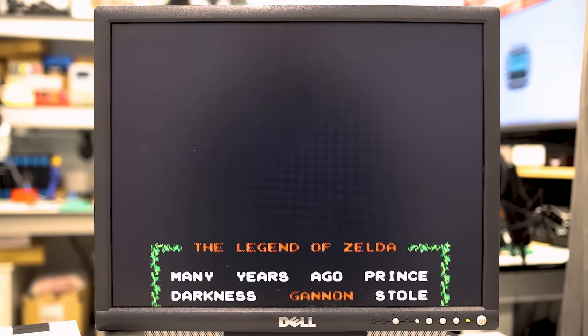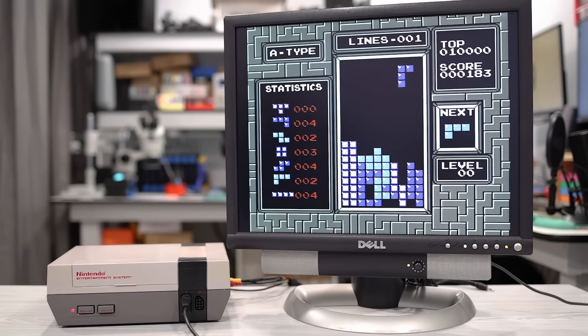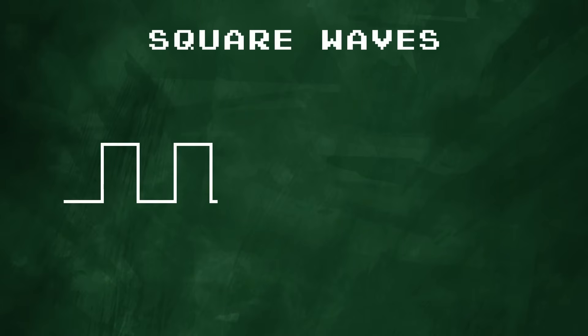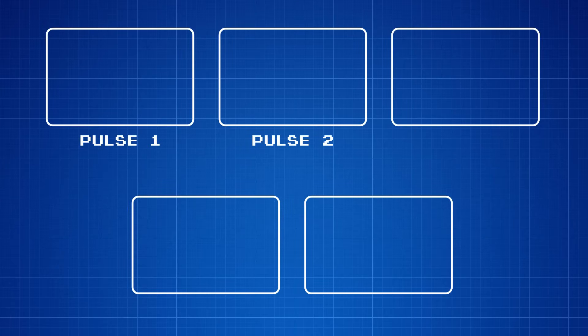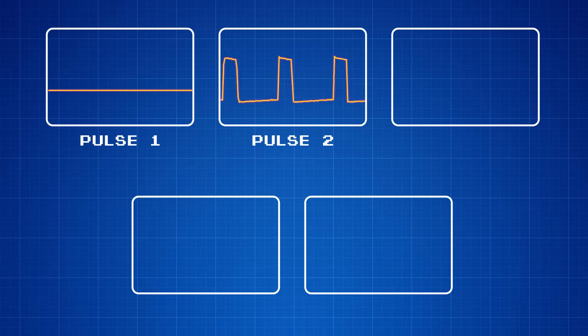For most games, everything from music to sound effects is produced by this chip. Nintendo combined together five distinct audio channels to get their sound. Two of the channels produce square waves, which are sometimes called pulse waves because they pulse a digital signal straight up to a logic high and then back down again. These pulse channels are typically used to play the melody of a song. And by combining both pulse channels together, they can be harmonized and have a neat polyphonic effect.